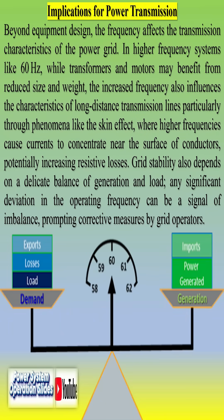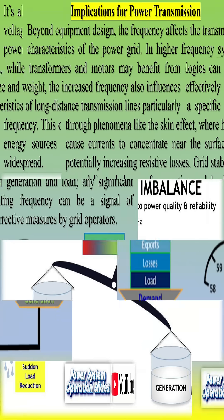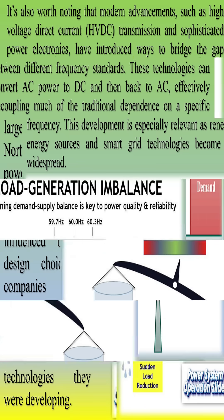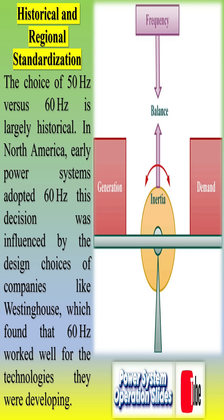The choice between 50 Hz and 60 Hz systems involves trade-offs. 50 Hz systems are more fuel-efficient and experience fewer losses in transmission, making them suitable for long-distance power distribution. On the other hand, 60 Hz systems benefit from smaller, lighter transformers and are often favored for localized power systems in regions where higher efficiency in transformers outweighs the increased transmission losses.